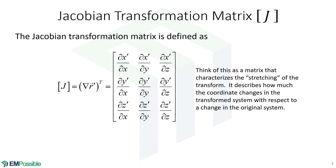There is something called the Jacobian Transformation Matrix — a matrix that's very useful for performing Coordinate Transformations. In its simplest form, it's defined as the gradient of the transform coordinate system, and then we transpose that. The gradient of a vector is rather interesting — it turns out the gradient of a vector is a tensor.